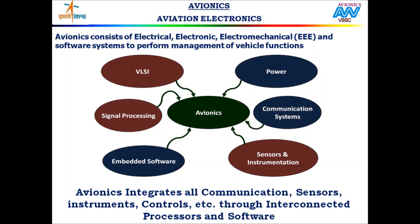Aviation electronics is shortened and called as avionics. Avionics means the integration of electrical, electronic, electromechanical and software systems to perform launch vehicle functions. All subjects under electronics and electrical category are utilized in avionics — for example, VLSI (Very Large Scale Integration), which deals with the fabrication of integrated circuits; signal processing systems; embedded systems; sensor and instrumentation systems; communication systems; and power systems, which powers all the above. All are equally important in avionic systems.